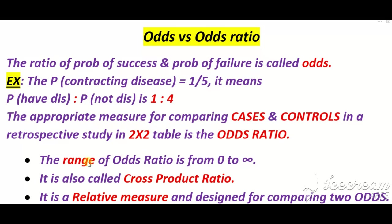The range of odds ratio is from zero to infinity. It is an important point to note that odds ratio is also called the cross product ratio.